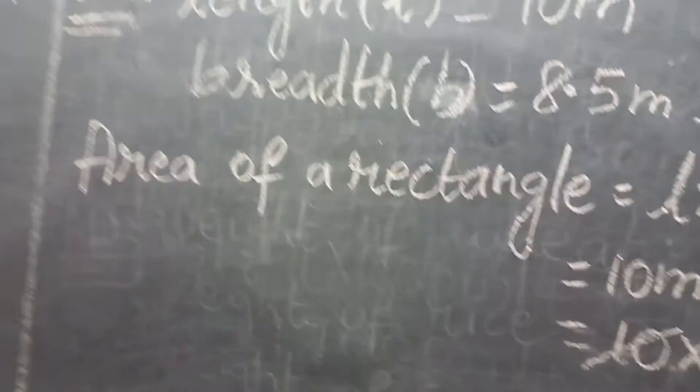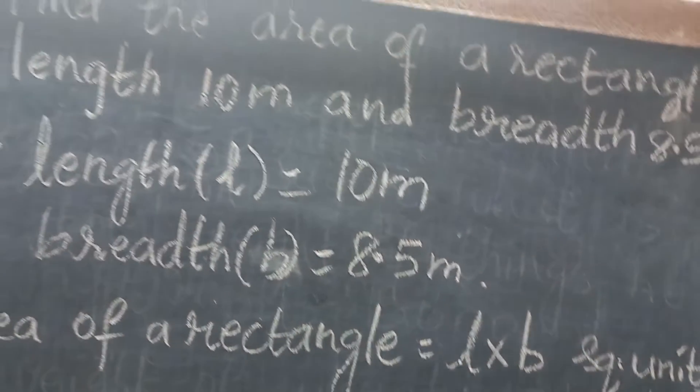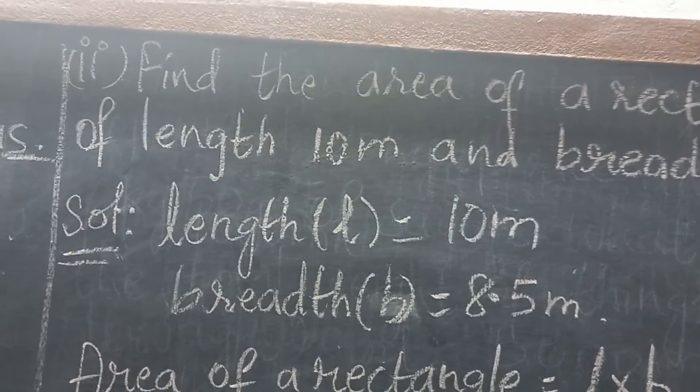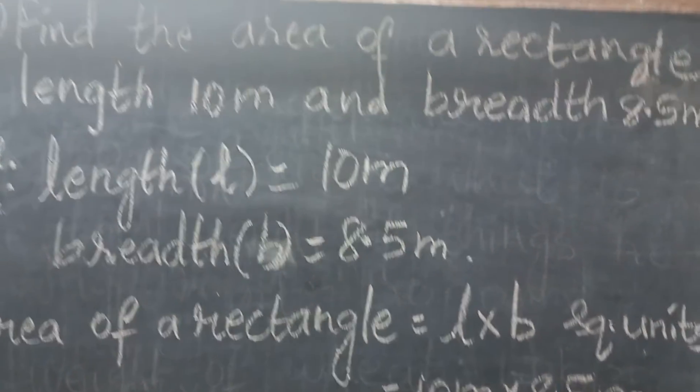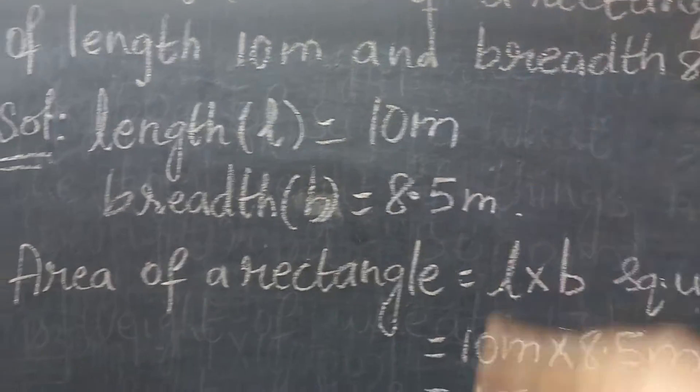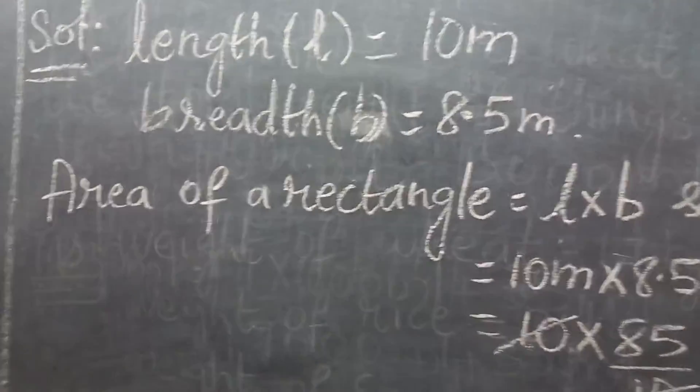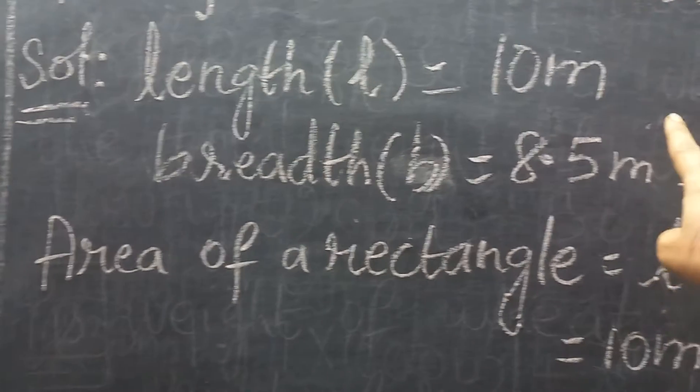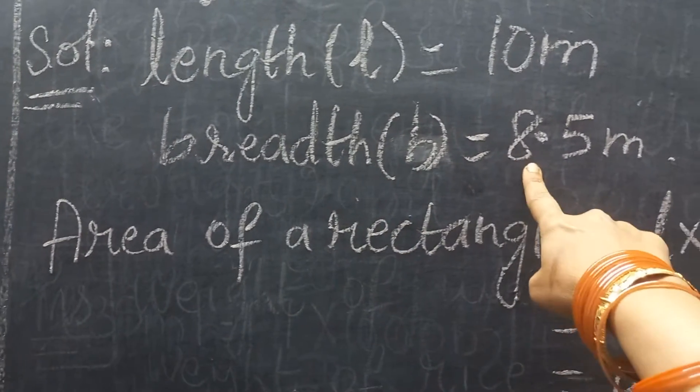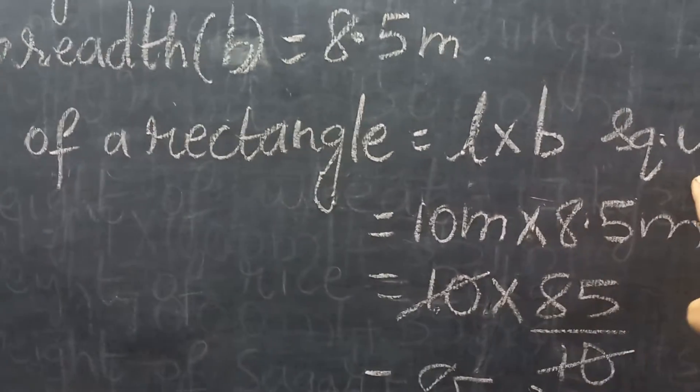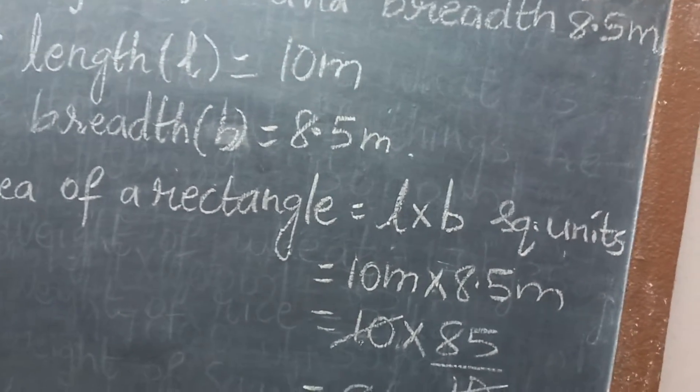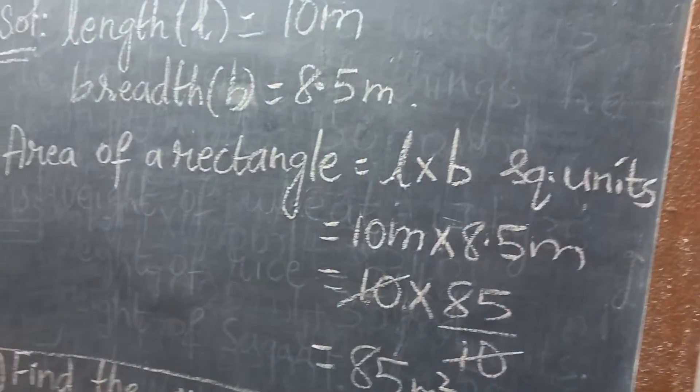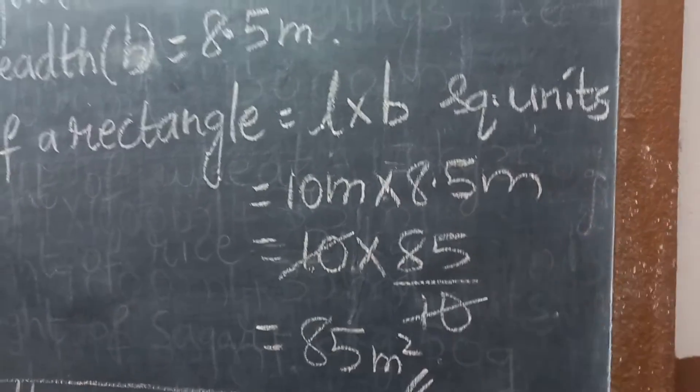Now, find the area of the rectangle of length 10 meters, breadth is 8.5 meters. Area of the rectangle, we have to find. Rectangle के formula क्या है, length into breadth में है. So, L is equal 10 meters, breadth is equal B, 8.5 meters. Area of the rectangle formula is L into B square units.